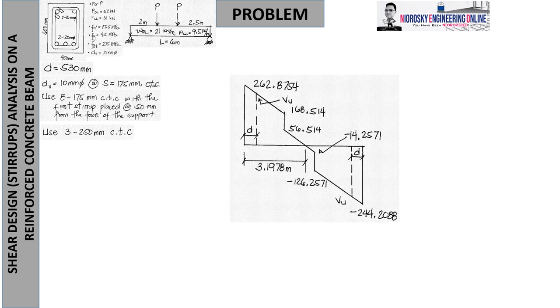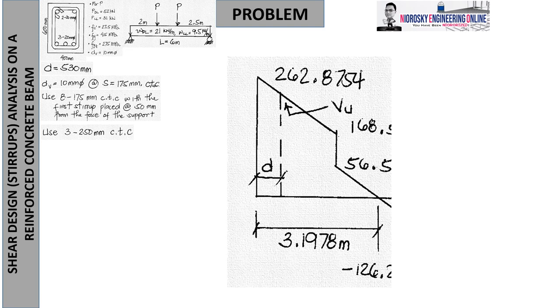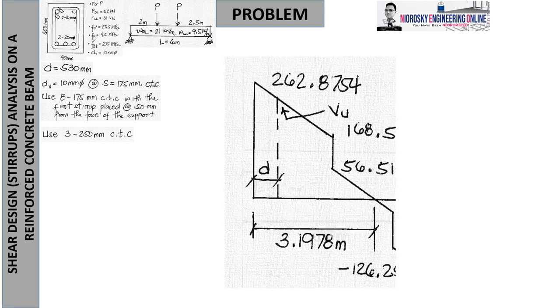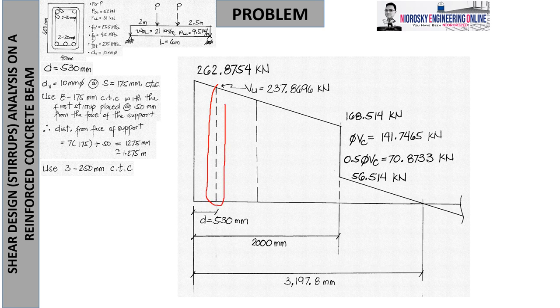This is our shear diagram. Let's look at the regions bounded by the stirrups. We have to focus on that. This is the diagram you'll see. If you notice, originally this is our VU line with a distance of effective depth 530mm. But when we counted the pieces, it's actually here at distance 1.275. That means this is our shaded region for critical.